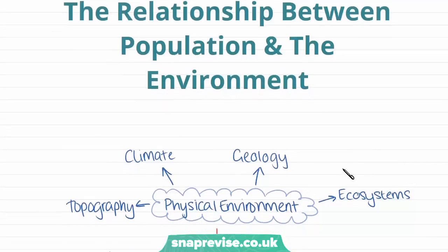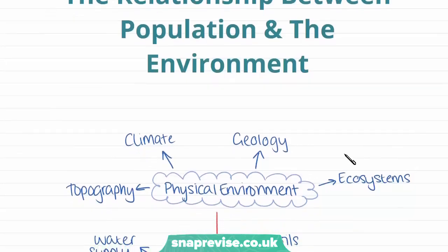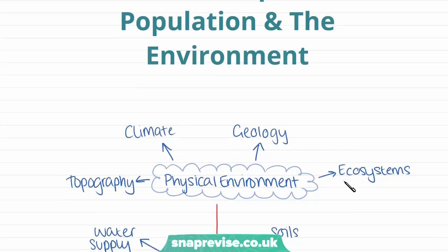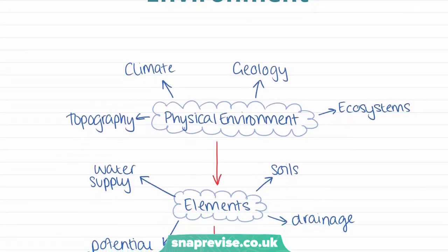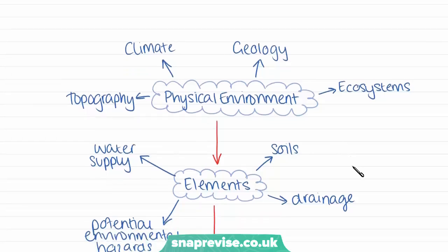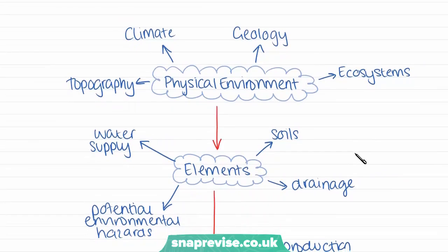The first thing we're going to look at is the relationship between the population and the environment. There are many facets of this relationship that we need to understand, and these factors are important for understanding population distribution across the world. They also implicate environmental impacts as well.